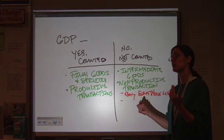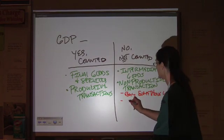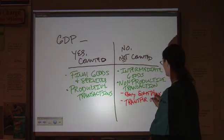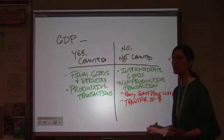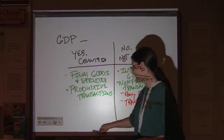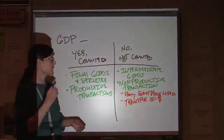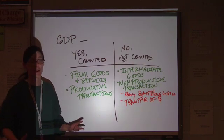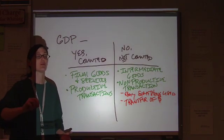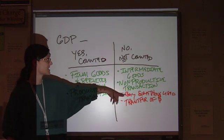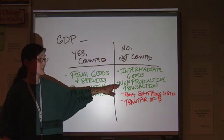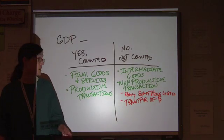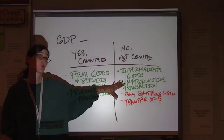If it's a transaction that just involves the transfer of money, then that's not production. If you buy a unit of stock, that's not production. That's a share of ownership in a company. Buying and selling stocks and bonds does not count in GDP. It's not a product. It represents a share of ownership. That's considered a non-productive transaction.